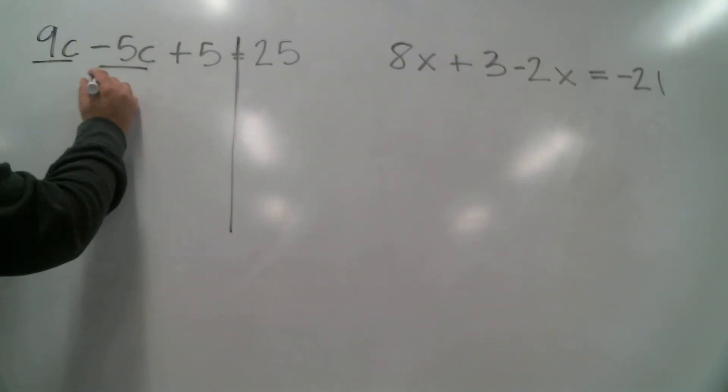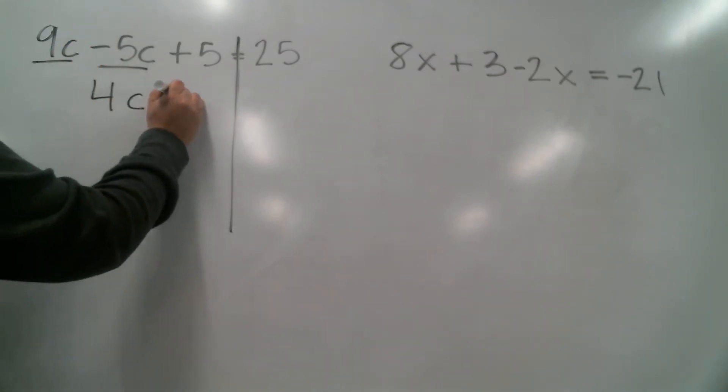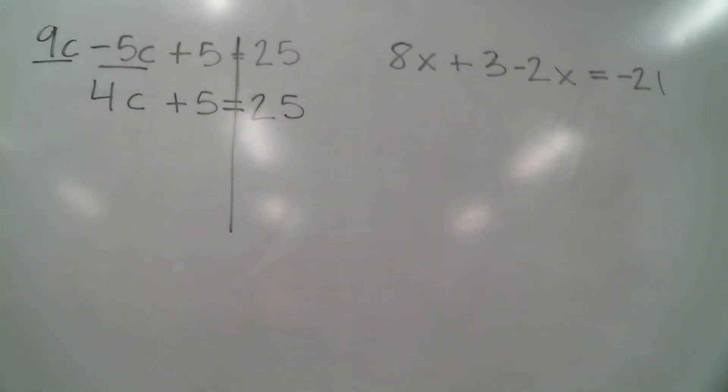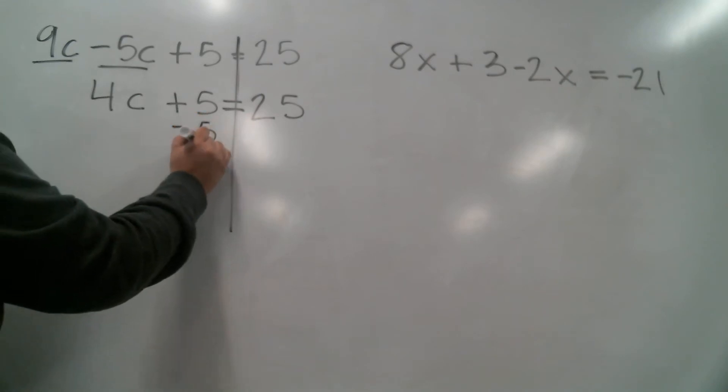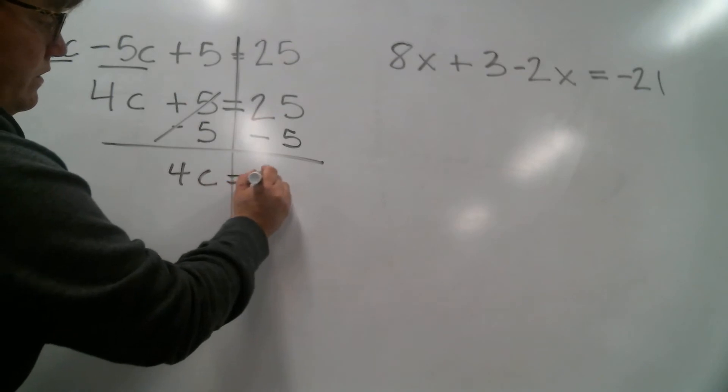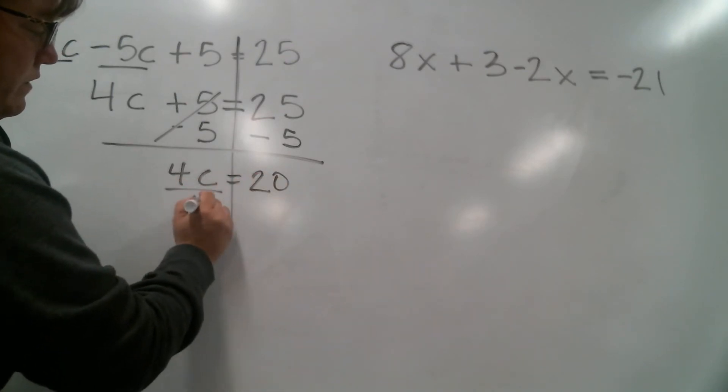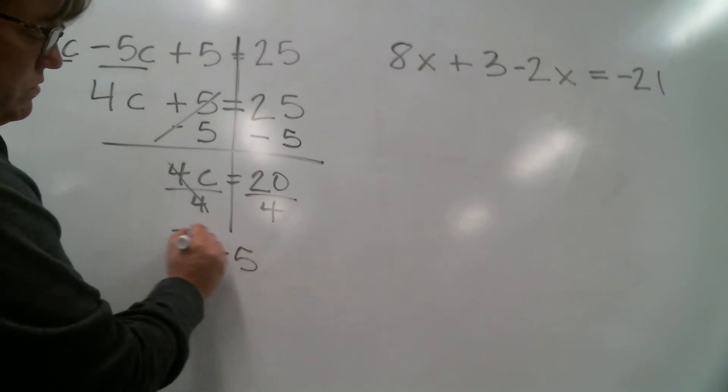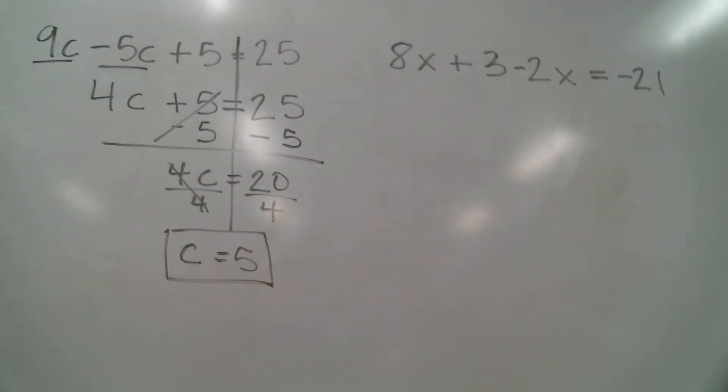Okay, so we're gonna rewrite this. We're gonna write 4c plus 5 equals 25. And now we have an equation just like what we worked on last week which should be pretty easy for you to solve by now. We start by subtracting the 5. We have 4c equals 20. Then divide by 4 and you get c equals 5. Okay, I'll leave that there so you can write it down.